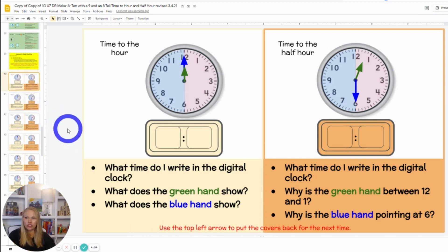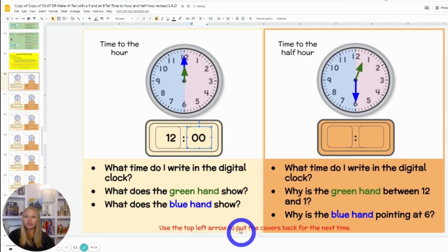So let's try. What time do I write in the digital clock? Class, 12 o'clock. What does the green hand show? Class, and they should say 12 is the hour. What does the blue hand show? The blue hand is the minutes. There are zero extra minutes. What time is it? 12 o'clock.